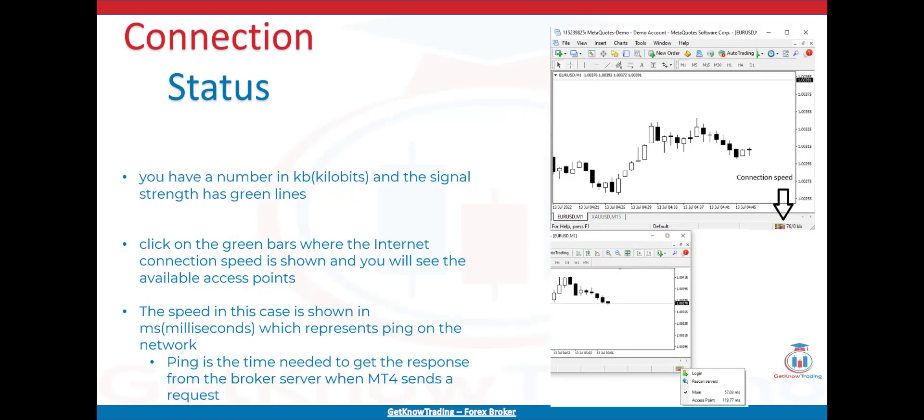In the image you can see how the internet connection status looks. You can see a number in kilobits and the signal strength shown as green lines. Those two parameters are the key points you need for a proper internet connection. When the internet connection is lost, you will not have speed in kilobits or green signal bars indicating signal strength. If that happens, you have lost internet connection and MT4 will stop working. When you click on the green bars where the internet connection speed is shown, you will see the available access points — the connections you can use to connect to the broker server.